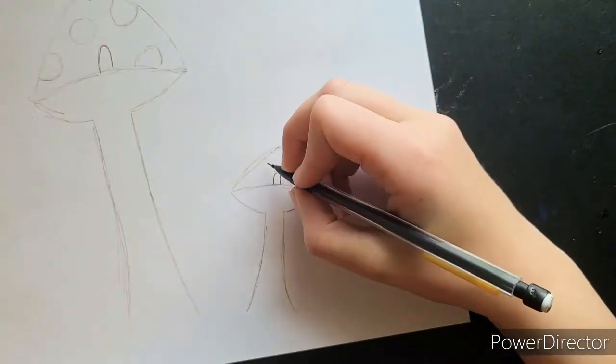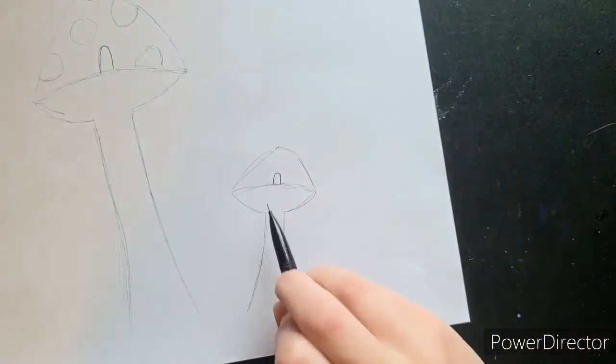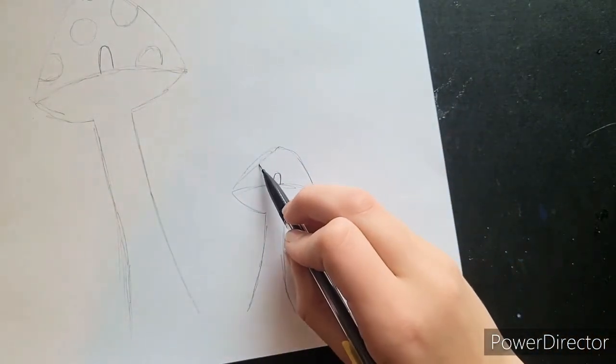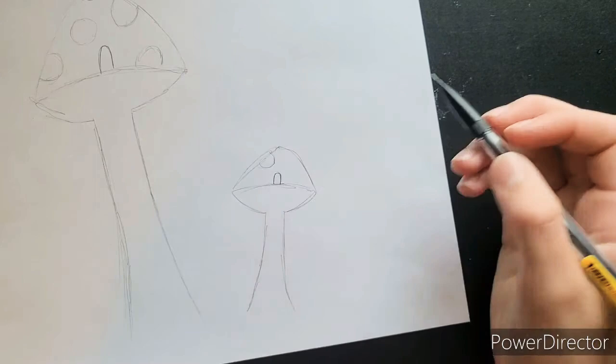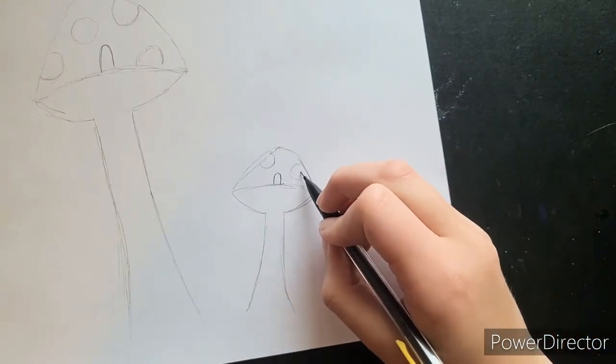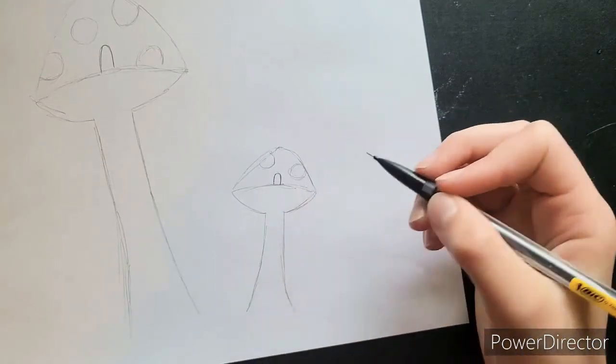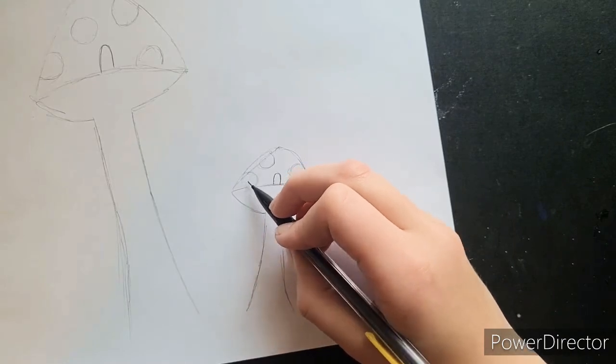Now on this side, we're going to do a circle right up here. So it'll look sort of like this. A circle right over here. Let's try to make this one a full circle. And down here, we'll do another circle.